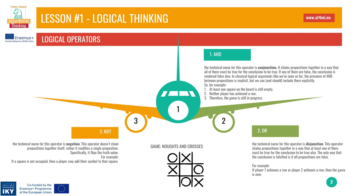To provide illustrative examples, we'll use the operators to describe the rules of a simple game: noughts and crosses. Operator AND. The technical name for this operator is conjunction. It chains propositions together in a way that all of them must be true for the conclusion to be true. If any of them are false, the conclusion is rendered false also. In classical logical arguments, the presence of AND between propositions is implicit, but we can and should include them explicitly. For example: 1. At least one square on the board is still empty. 2. Neither player has achieved a row. 3. Therefore, the game is still in progress. This can be expressed as: if at least one square on the board is still empty AND neither player has achieved a row, then the game is still in progress.